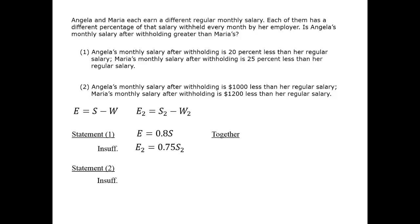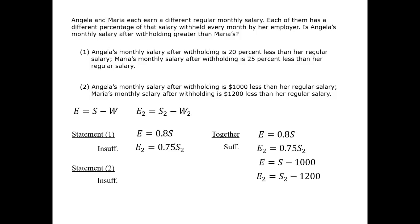When the statements are combined, we may have something because we have four distinct equations and four variables. We have the two that we already knew, and we also have the two equations given to us by data statement two. The first and third equations will allow us to determine E. The second and fourth equations will allow us to determine E2. We'll then be able to compare them directly. So together, we have sufficient data to answer the question.